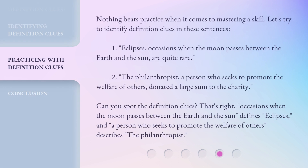Nothing beats practice when it comes to mastering a skill. Let's try to identify definition clues in these sentences. 1. "Eclipses, occasions when the moon passes between the earth and the sun, are quite rare." 2. "The philanthropist, a person who seeks to promote the welfare of others, donated a large sum to the charity." Can you spot the definition clues? That's right. "Occasions when the moon passes between the earth and the sun" defines "eclipses," and "a person who seeks to promote the welfare of others" describes "the philanthropist."